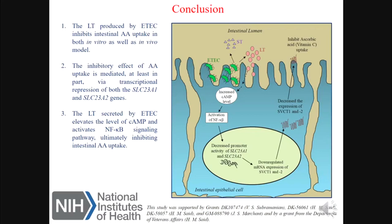In summary, these findings demonstrate that LT-toxin produced by enterotoxygenic E. coli inhibits intestinal ascorbic acid uptake, and this effect is mediated at least in part via transcriptional repression of both the SLC23A1 and SLC23A2 genes via a cyclic AMP-dependent NF-κB mediated intracellular signaling pathway. Collectively, the outcome of our study will help in designing effective strategies to optimize normal vitamin C body homeostasis, especially in conditions associated with deficiency or sub-optimal levels due to prolonged diarrheal illness upon enteric pathogen infection. Thank you for watching our video abstract.